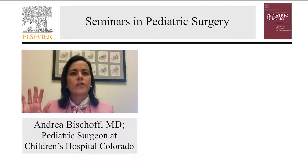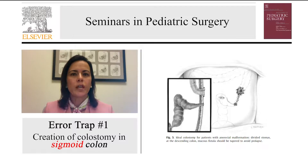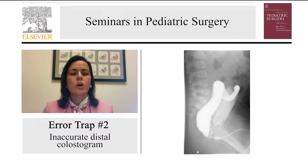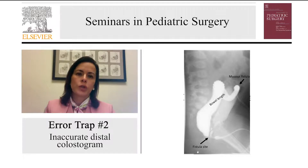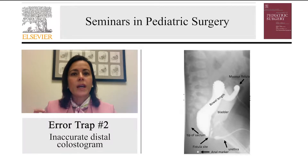We have identified five error traps. The first is the creation of a colostomy too distal in the sigmoid colon. Our recommendation is for a colostomy at the descending colon. The second error trap is having an inaccurate distal colostogram. A correctly done distal colostogram should show the site of the mucous fistula, the amount of bowel length available for the pull-through, the end of the rectum or the connection to the urinary tract, whenever possible the bladder and the urethra, the tip of the sacrum, and the anal marker.